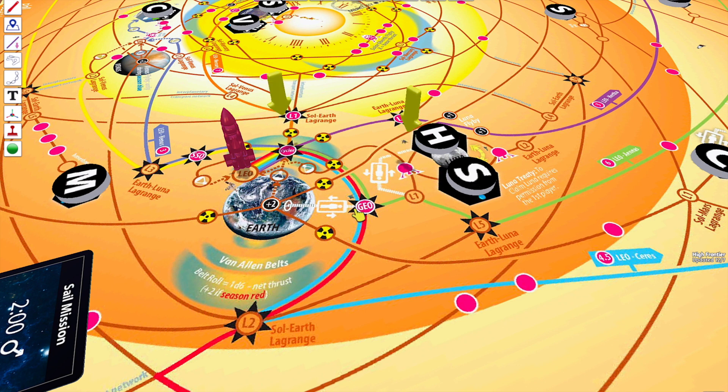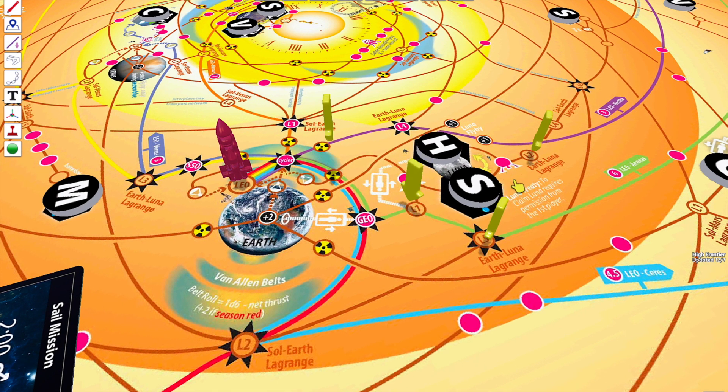Entering magenta space costs 1 burn. Entering other circles is free. Entering sites is also free, but it does end your movement.